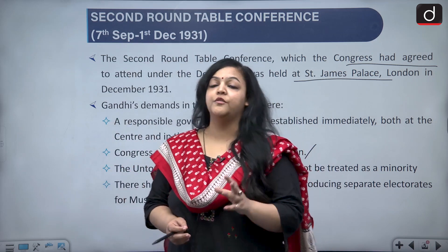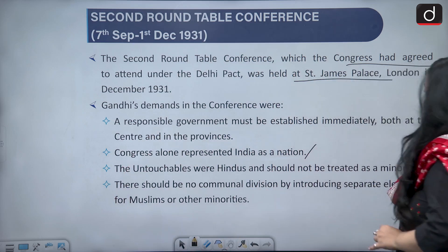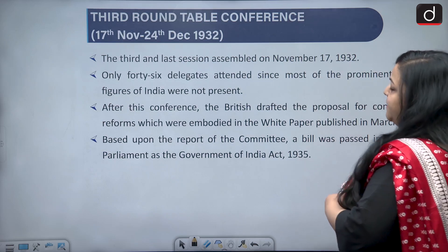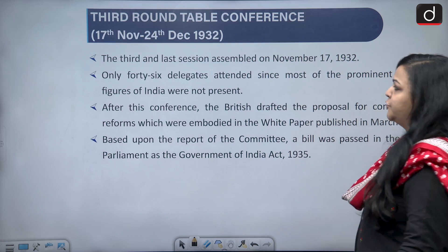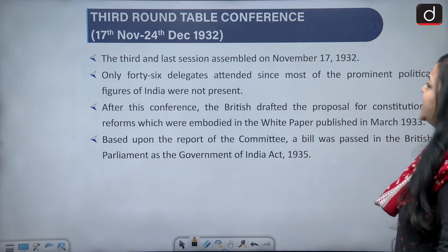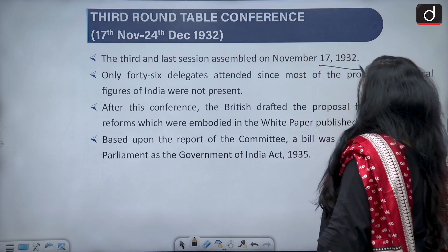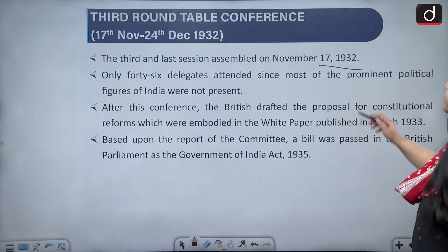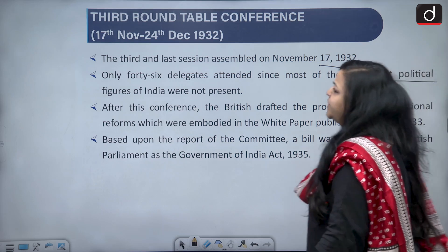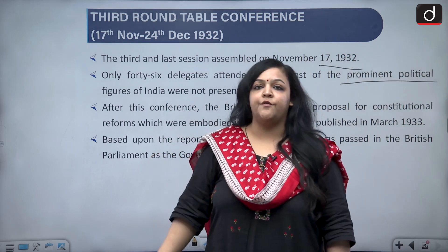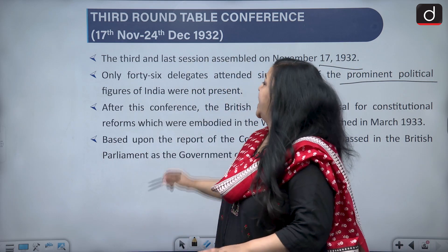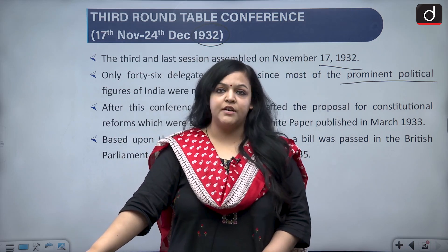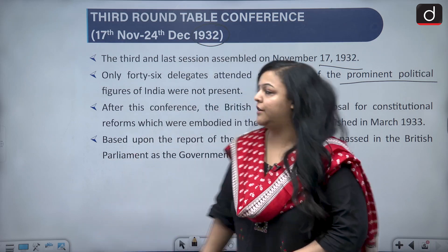The Third and last Round Table Conference was from November 17 to December 24, 1932. Only 46 delegates attended, since most of the prominent political figures of India were not present. They were not present because they were in jail — this was the time period when most of the prominent leaders had been thrown into jail by the British.